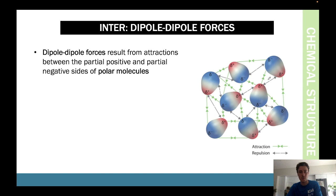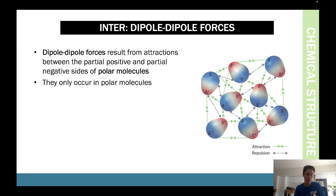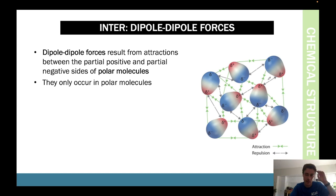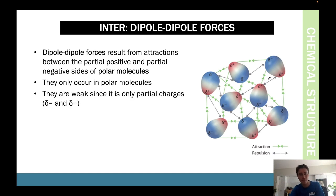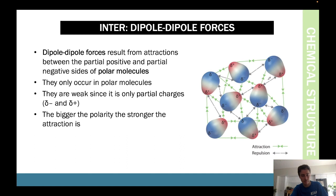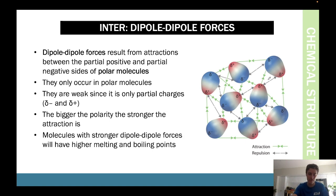Dipole-dipole forces result from the attraction between the partially positive and partially negative sides of polar molecules. When a molecule is polar, it's slightly positive on one side and slightly negative on the other — neutral overall, but with distinct poles, like a magnet. The weak positive and negative charges attract each other, forming a small bond between molecules — this is dipole-dipole. Molecules with stronger dipole-dipole forces have higher melting and boiling points.